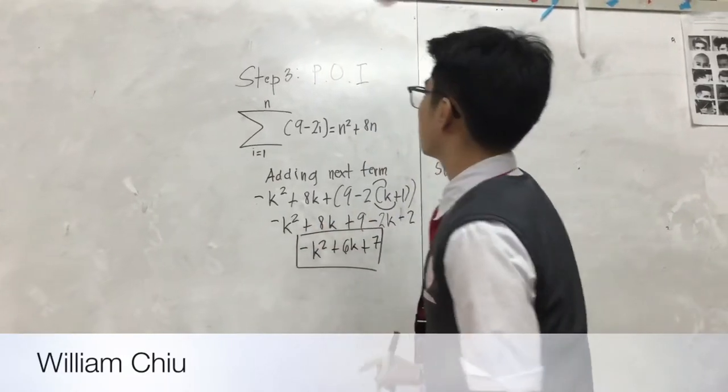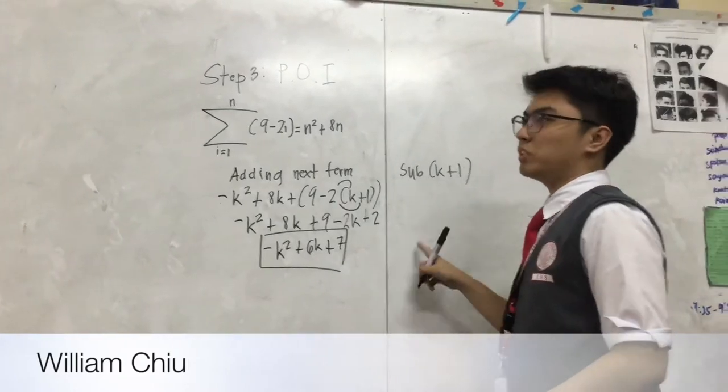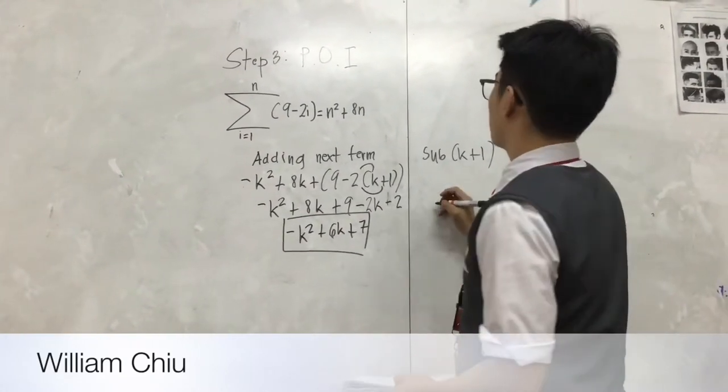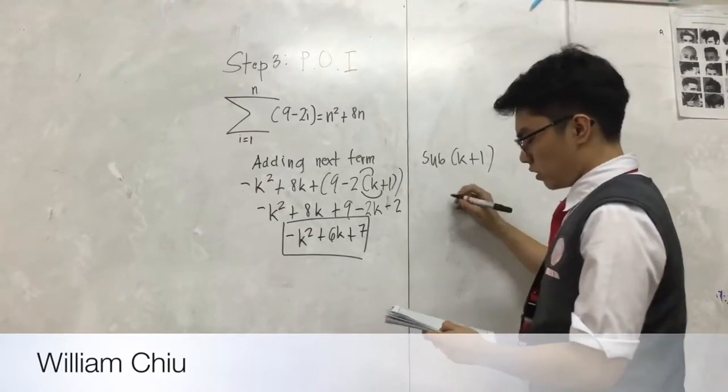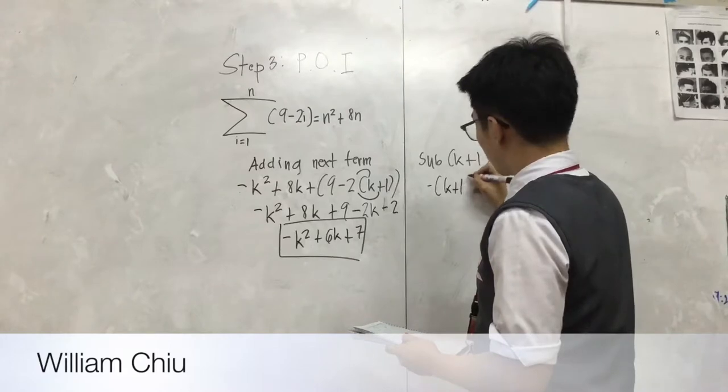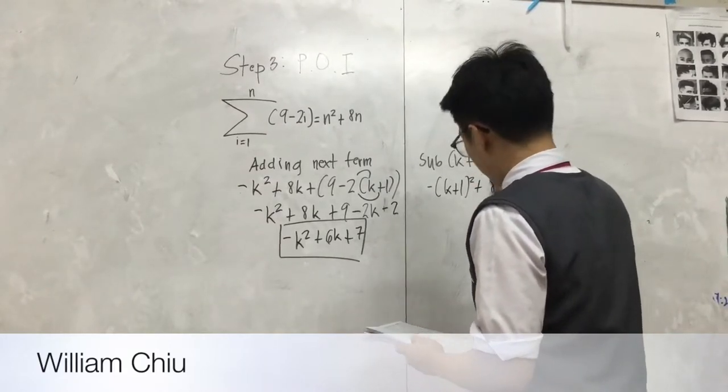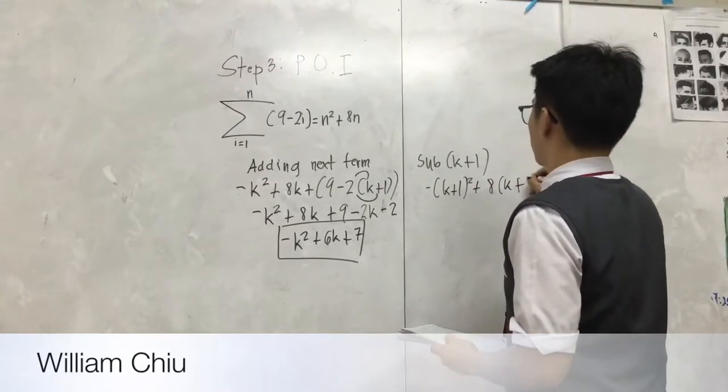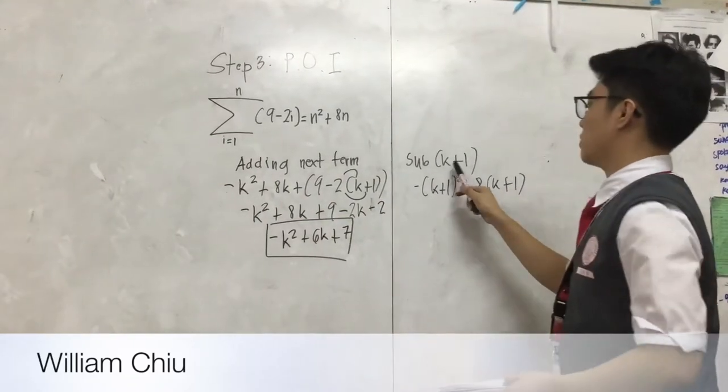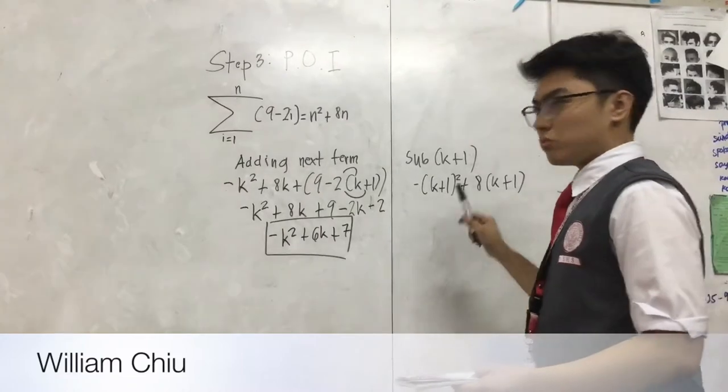In order for this to be true, the answer must be the same as we substitute k plus 1. Substituting k plus 1: negative (k plus 1) squared plus 8 times (k plus 1). We just substitute k plus 1 for all variables.